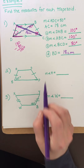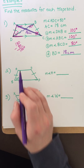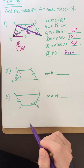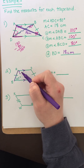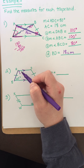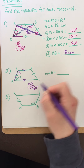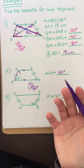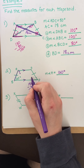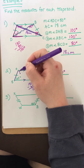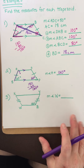For number two, angle E is 60 degrees and we need to find the measure of angle H. If I think of these as parallel lines, then angles E and H are same side interior angles, which means they're supplementary. So 180 minus 60 equals 120 degrees. Another way: angle E's base-angle partner is also 60°, and opposite angles are supplementary — either way you get 120 degrees.